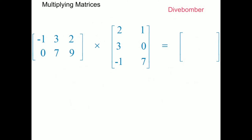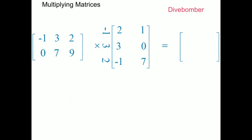Using dive bombing, the first row of the first matrix comes along and dive bombs the first column of the second matrix. This illustrates why the number of columns in the first matrix must match the number of rows in the second: when row 1 (elements 1, 3, 2) lines up against the first column, each element has a corresponding element. If there were more numbers in one but not the other, they'd have nothing to match up against — that's why the dimensions must be compatible.